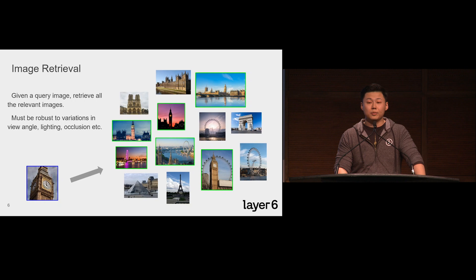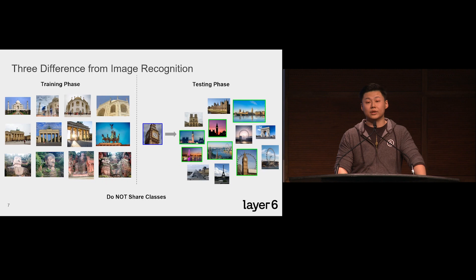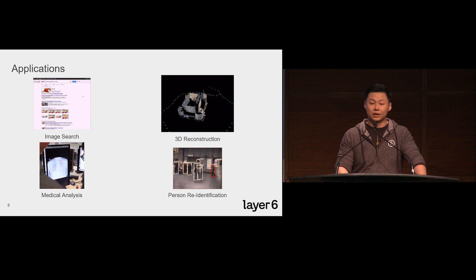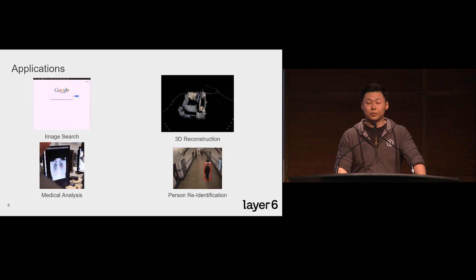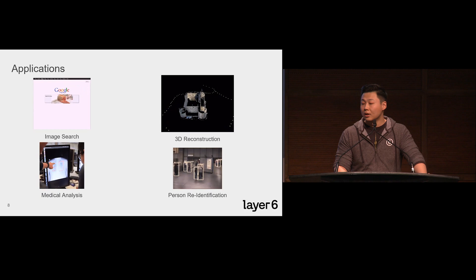Image Retrieval is a task where we are given a query image. The goal is to retrieve all relevant images from a database set. Here, relevant means the images contain the same landmark or objects. As we can see, the variations in view angle, lighting, and occlusions make it very challenging. What makes this even harder is that training on the same set of labels as the testing set is not allowed.